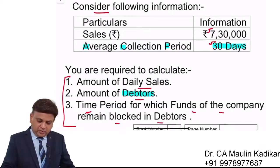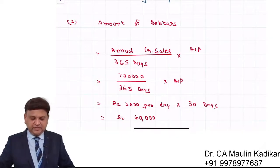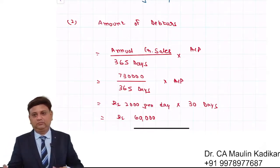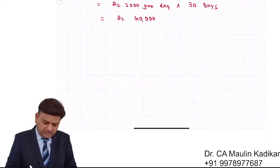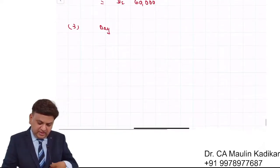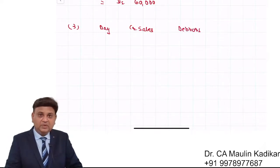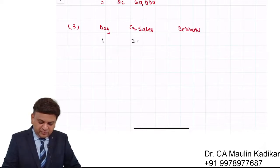The next question is: what is the time period for which funds of the company remain blocked in debtors? Let us understand the answer with a discussion. Consider a table with three columns: Day, Credit Sales, and Debtors. On the first day of business, let us see what would be the debtors.